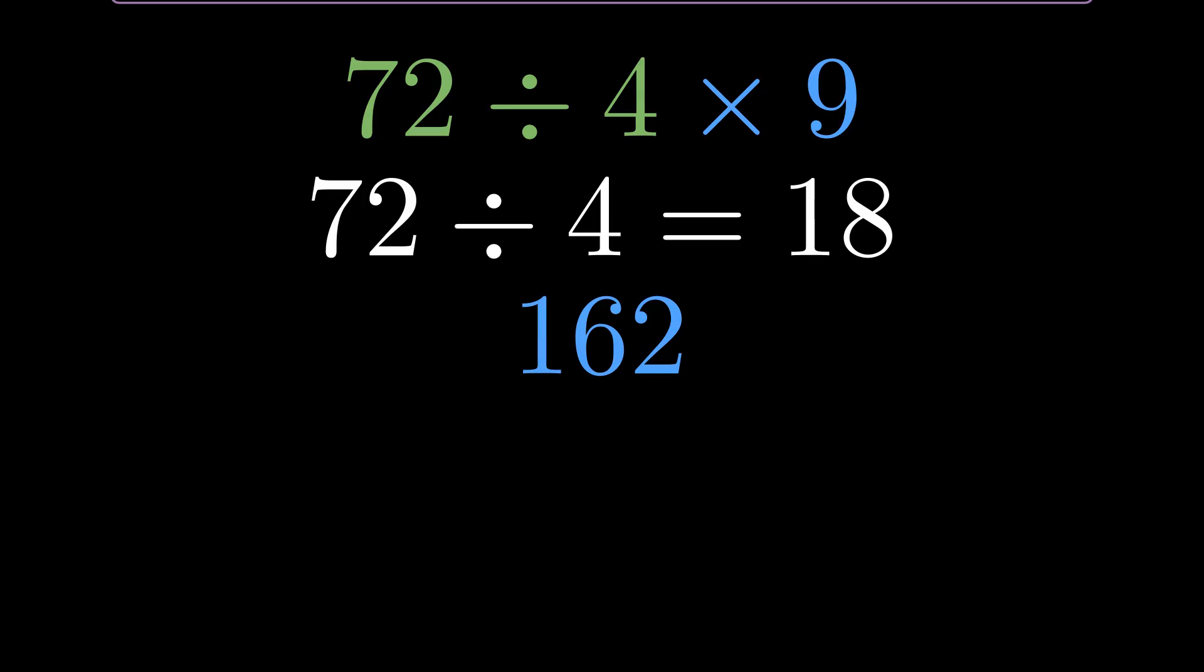And here's the thing. This exact problem has been tested on different calculators and software, and you get different results depending on how they handle implied multiplication. So we have Team 2 and Team 162. Both convinced they're right. Both have logical reasoning. What's the real answer?